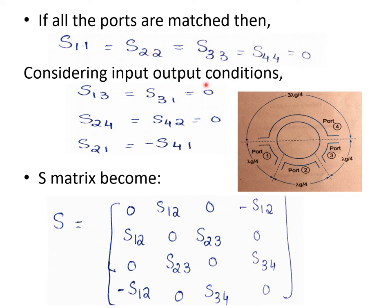Considering the input-output conditions: if input is applied at port 1, it goes to port 4 and port 2 in clockwise and anticlockwise directions. Because of phase difference, if one is positive the other will be negative. So we can write S21 = −S41, or equivalently S12 = −S14. Also, since input at port 1 appears only at ports 2 and 4, S13 and S31 will be zero.